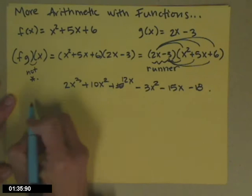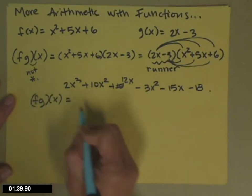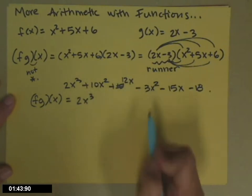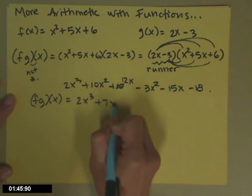Then you combine like terms to simplify. So 2x cubed, I have a 10x squared minus 3x squared. Those guys can combine.